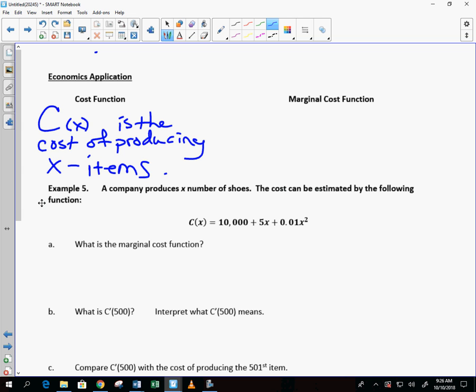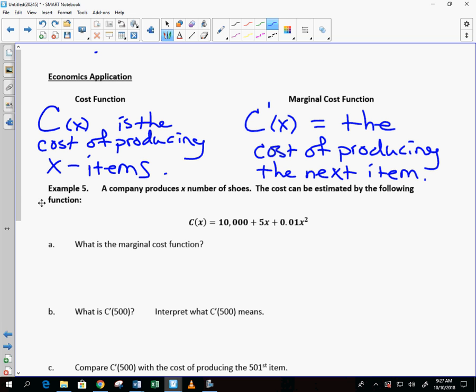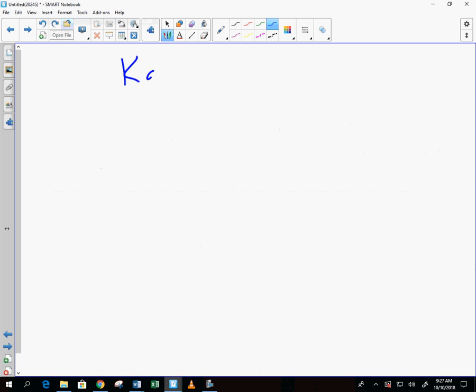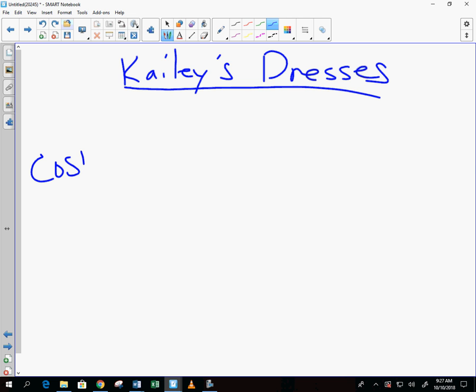So the cost function, c(x), is the cost of producing x items. The marginal cost function is c'(x). It tells us the cost of producing the next item. Kayley's dresses. Is that the name of your shop, Kaylee? Huh? We got cost. We got dresses. Okay?